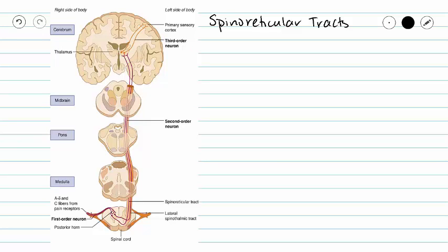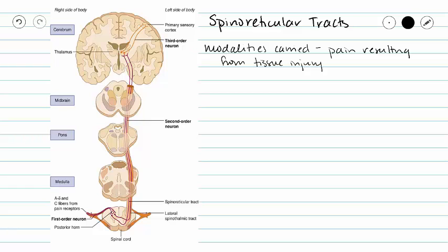This video is a continuation in our series on the spinal cord and this video will cover our spinal reticular tracts. Our spinal reticular tracts are going to carry pain resulting from tissue injury. Often we call this deep pain because it involves your organs, and we're going to begin with the same pathways that we have seen before.